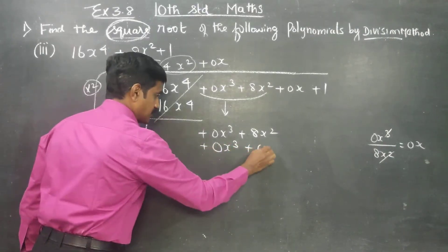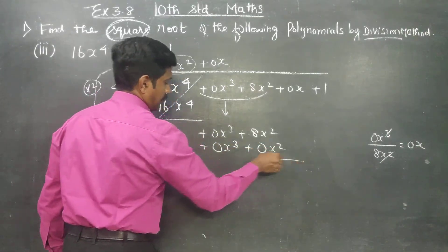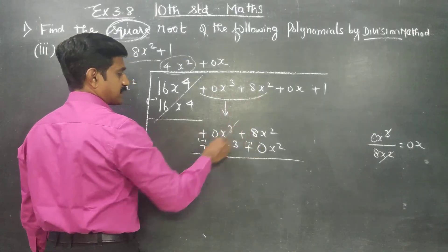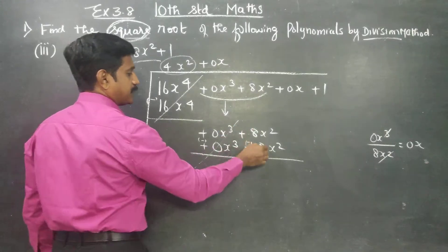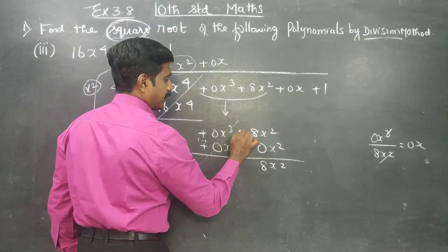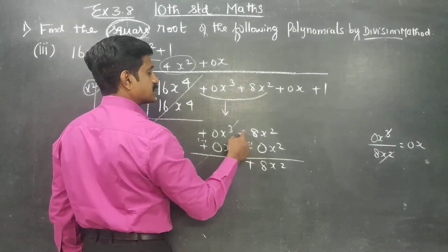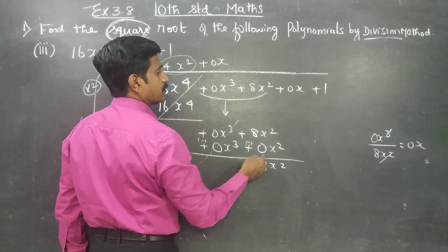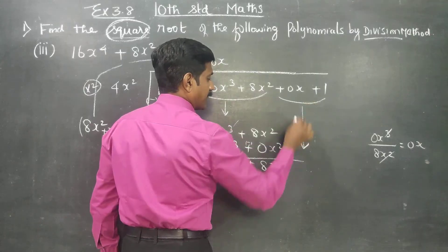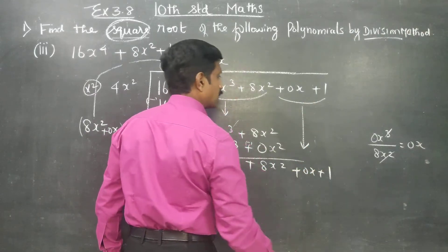Change the symbol — minus and minus will cancel. 8 minus 0 is 8x square. The biggest term is plus. Looking at the square root step, the next quotient term is 2x square. Bring down 0x plus 1. The next divisor step uses 2x square.